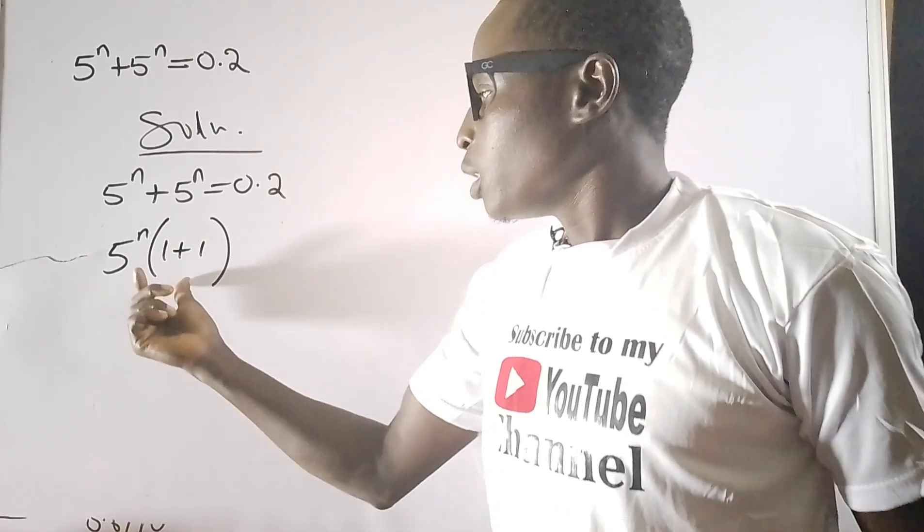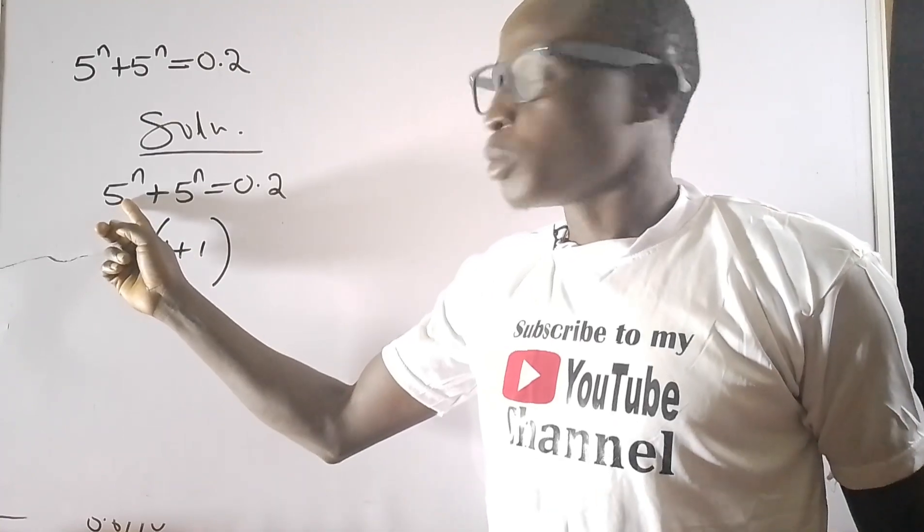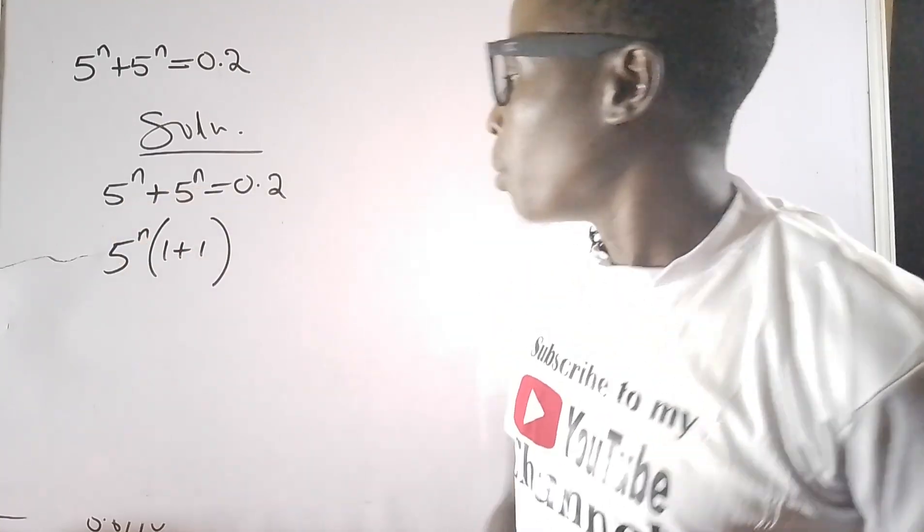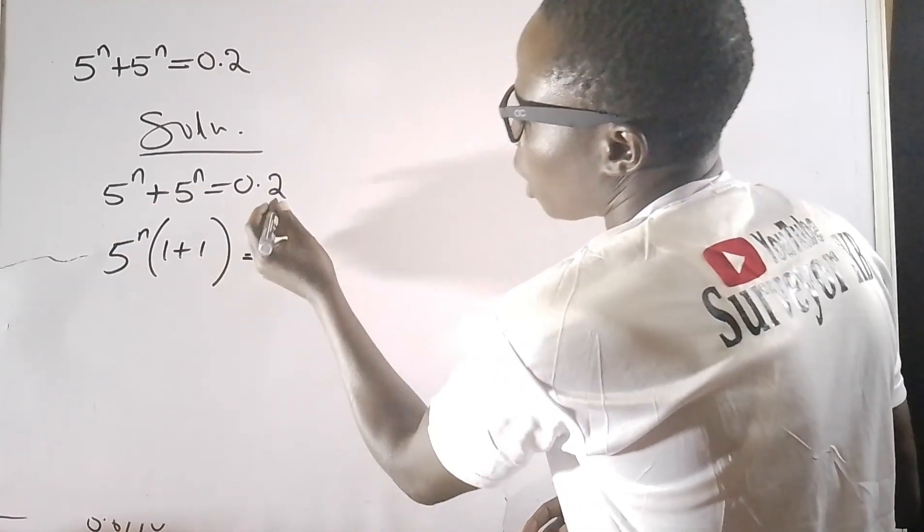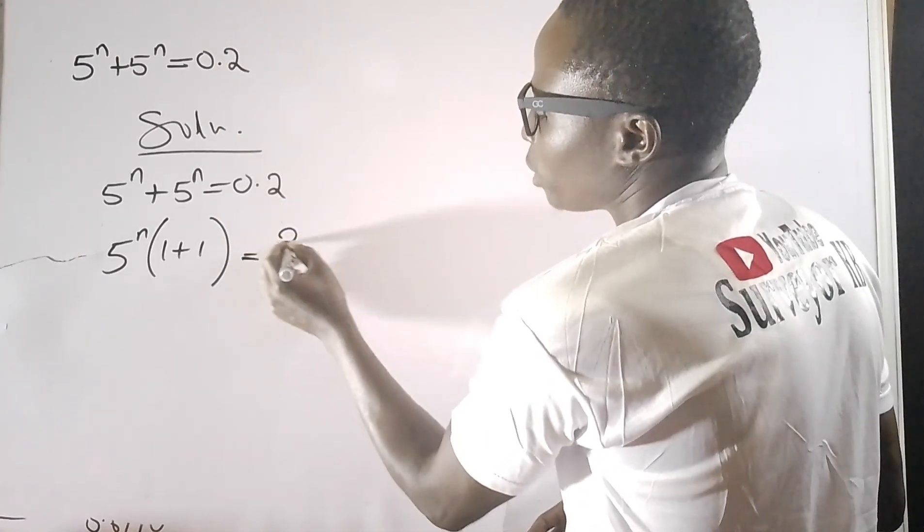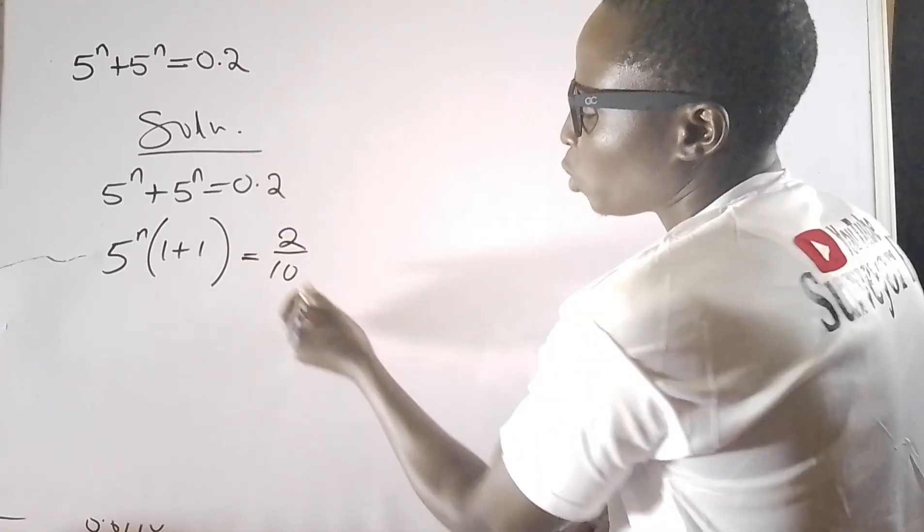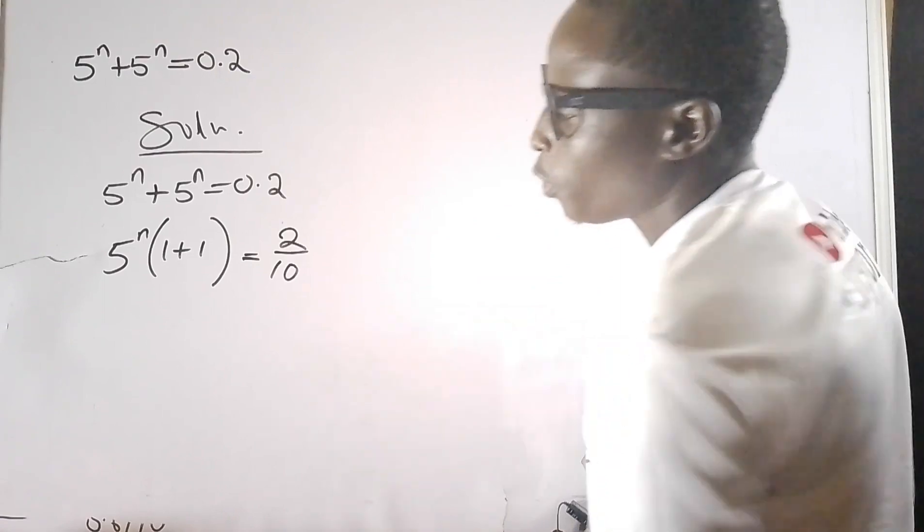It's equal to 0.2, which can be written as 2 over 10. Going further, we will have 5^(n) times 2, because 1 + 1 is 2, equals 2 over 10.